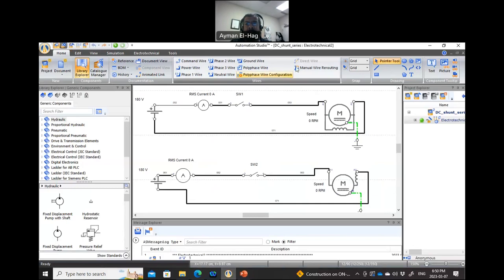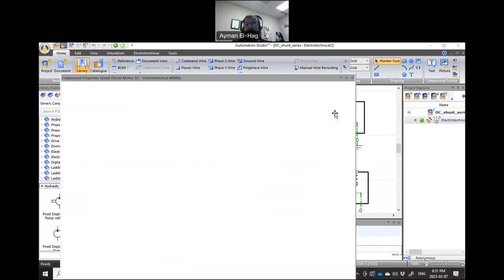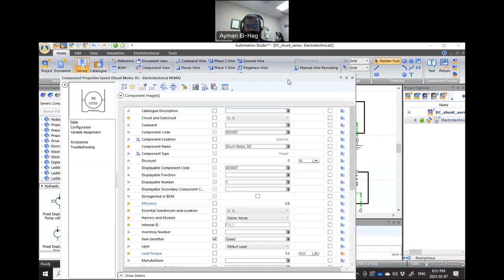So this is the model that we will use. This is the circuit model that we will have here. Basically, we have a motor, we have a switch, we have an ammeter, and we have a DC supply. So they are identical. Before we run the simulation and see the impact of changing the torque on the shaft on the speed, let me double-click on the first motor here and let's see some of the characteristics of that motor.